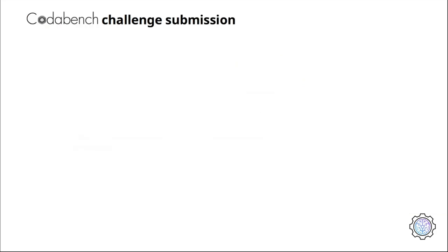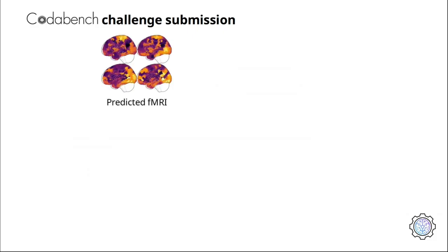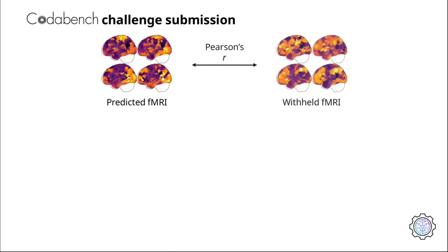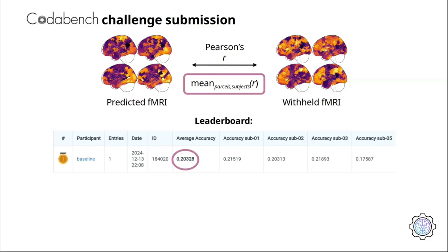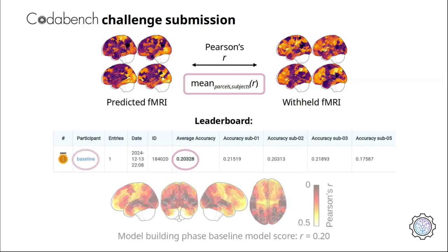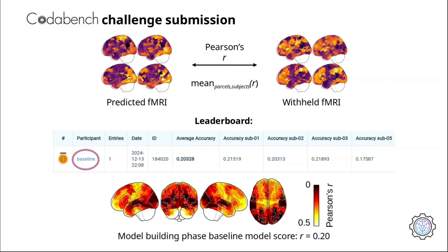To quantify the accuracy of your encoding model, you will submit its predicted fMRI responses to the test movie stimuli to Codabench. After each submission, the scoring program will compare your predicted fMRI responses for each parcel and subject with the withheld fMRI responses using Pearson's correlation. To compute the challenge evaluation metric, these correlation scores are averaged, first across parcels, then across subjects, resulting in a single correlation score that quantifies the performance of your model. And the leaderboard will be automatically updated with the score after each submission. On the leaderboard, you will also find the baseline model score. For example, here you can see the performance of the baseline model for the model building phase.